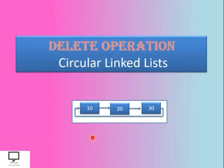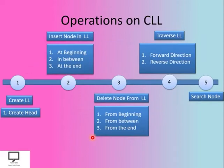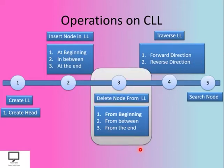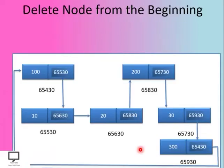Now let's start with the delete operation on a circular linked list. We have already seen many operations in this video series. Now let's delete a node from a CLL, where we can delete from three different positions. Let's start with the first one: delete a node from the beginning. Consider this circular linked list with a head node, second node, third, fourth, fifth, and sixth node — six nodes total.